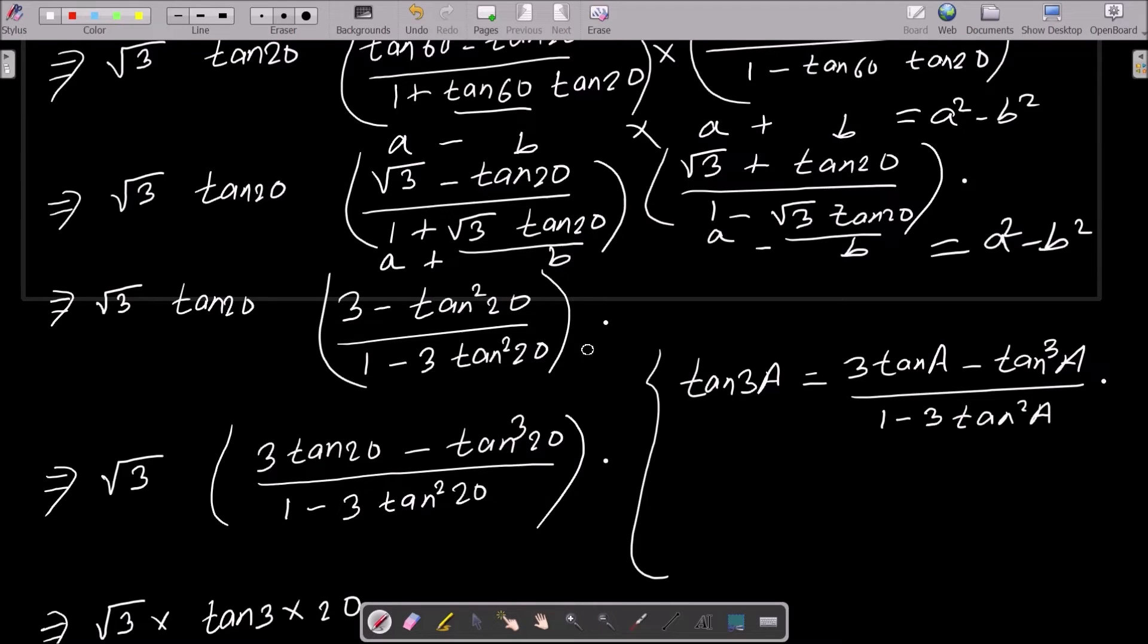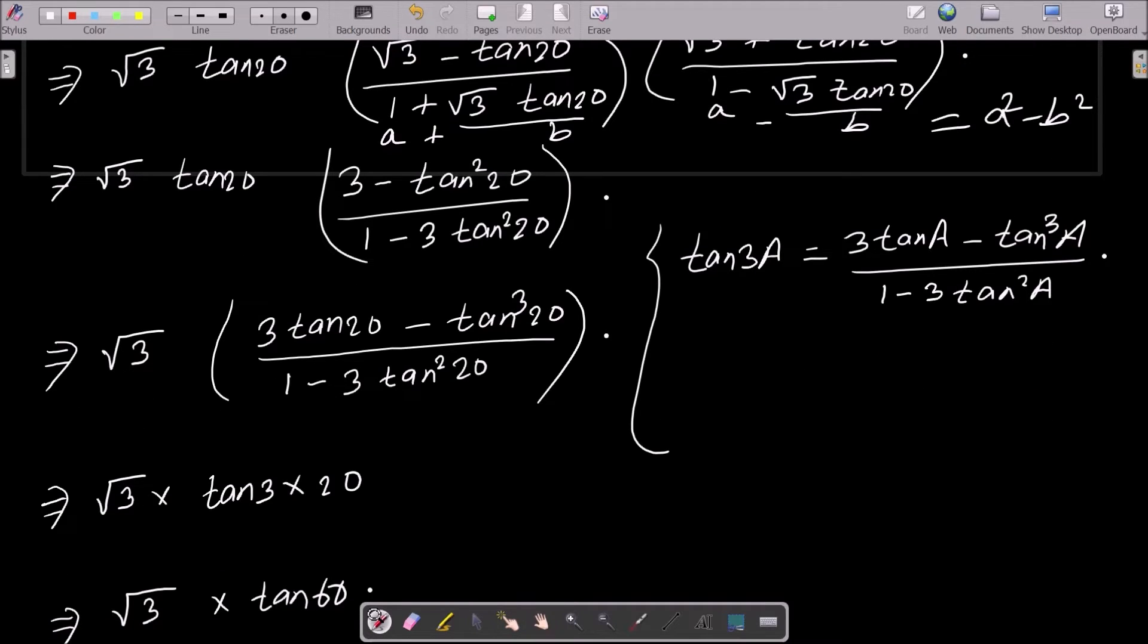After doing this, now you need to multiply tan20° with this all. So (3tan20° - tan³20°) divided by (1 - 3tan²20°). The tan(3a) formula is (3tanA - tan³A) divided by (1 - 3tan²A). Here a is equal to 20°.